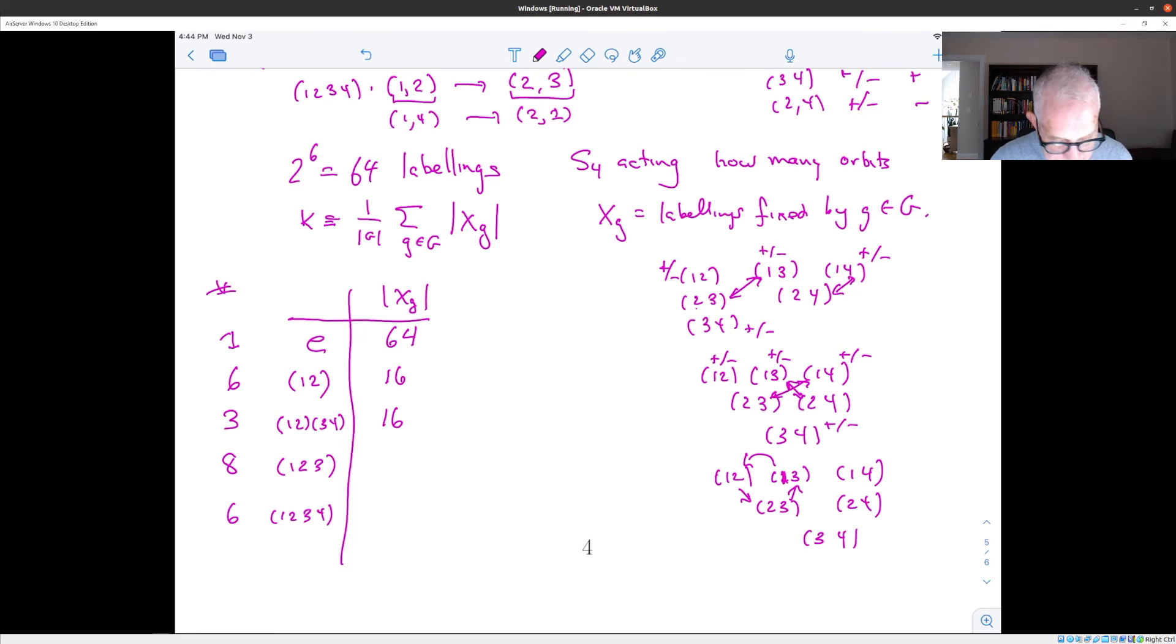What about these? Well, 14, the 4 is left alone. So 1 goes to 2, 2 goes to 3, 3 goes to 1. So those edges go in a cycle. So I can put anything I want on these 3 and anything I want on those 3, but they have to have the same values if they're going to be fixed under this. So there's 4 possibilities there, 2 times 2.